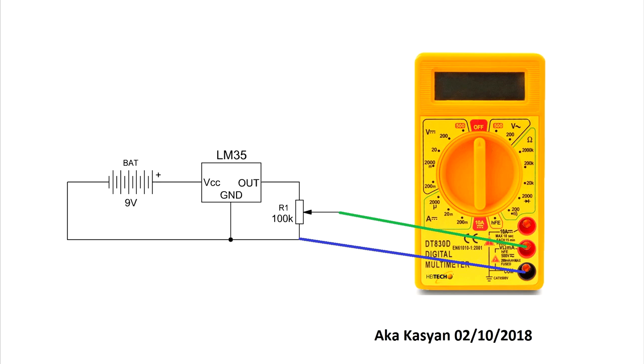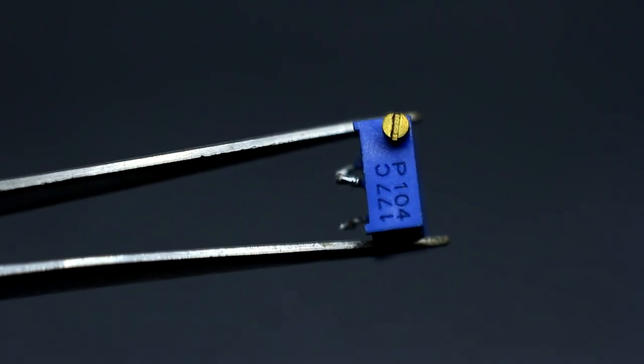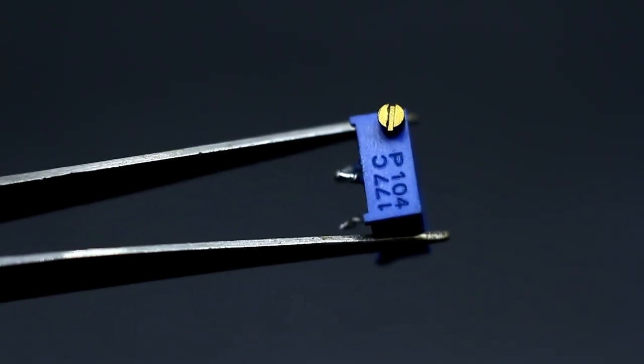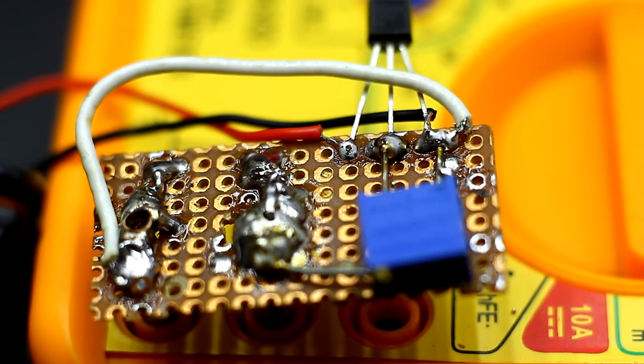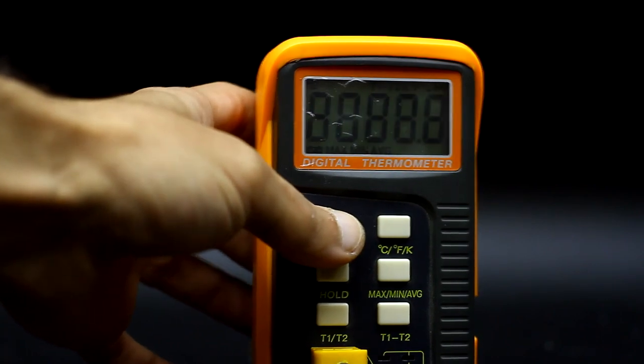This addition is powered by a separate 9V battery 6F22. At the output of the chip is a voltage divider which is a trimming multi-turn resistor for 100 kOhm. We must collect everything according to the circuit.